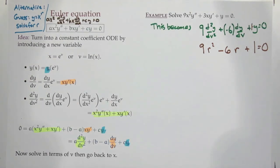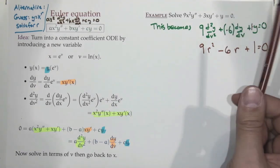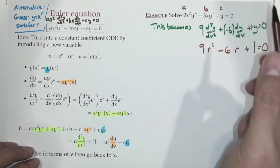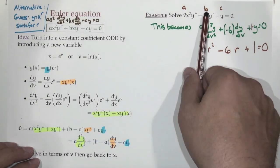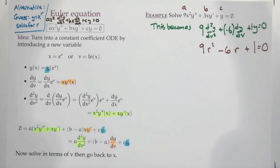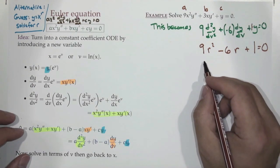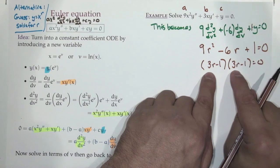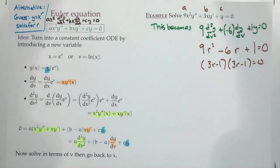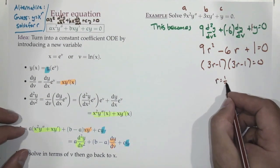How did we get negative six? A = 9, B = 3, C = 1, so B − A = 3 − 9 = −6. Now, 9r² − 6r + 1 — does it factor? Yes: (3r − 1)(3r − 1). Check: 9r² − 3r − 3r = −6r, plus 1. So we have a repeated root at r = 1/3.